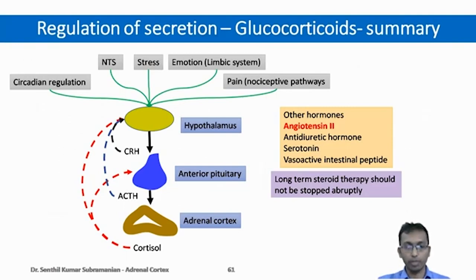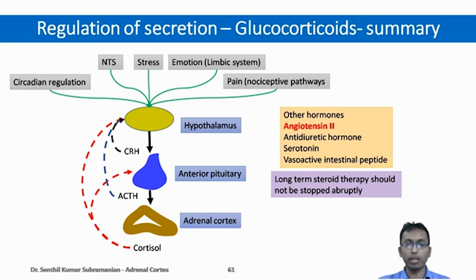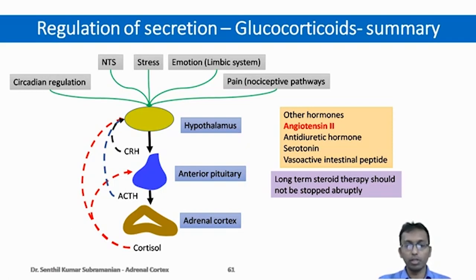To summarize the regulation of cortisol secretion: it is under the influence of the hypothalamo-pituitary axis. The hypothalamus is influenced by stress, emotion, pain pathways, and circadian regulation. Cortisol secretion is also under feedback regulation by long-loop, short-loop, and ultra-short-loop mechanisms. Other hormones such as angiotensin-2, antidiuretic hormone, serotonin, and vasoactive intestinal peptide can influence cortisol secretion, though their physiological significance is not yet clear. Long-term steroid therapy should not be stopped abruptly due to risk of adrenal cortex atrophy — it should be tapered.